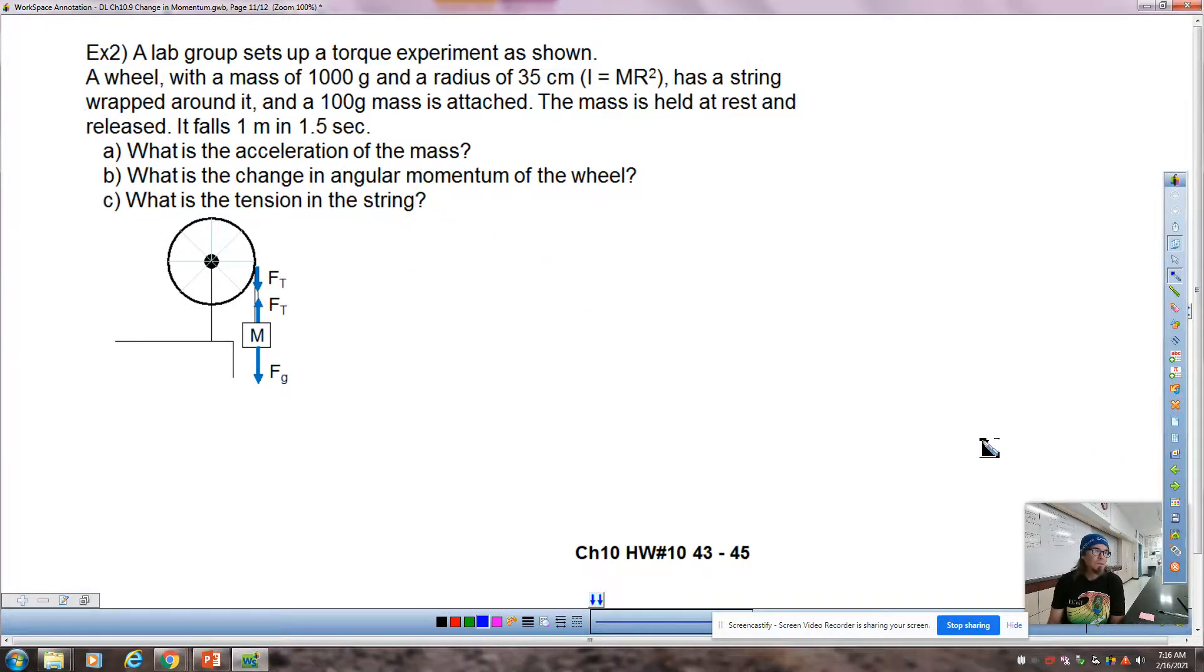Last example. We've been seeing this one here. We have a lab that was similar to this, and I'm not sure if the lab question included the part B with the change in angular momentum. Hopefully it did. But in the end, this obviously is a very common problem, so we should expect this for the chapter test as well. A lab group sets up a net torque experiment as shown. The wheel with a mass of 1,000 grams, radius of 35 centimeters, has a string wrapped around it, 100 gram mass attached. The mass is held at rest and released. It falls one meter in 1.5 seconds. So now we're looking at some motion variable stuff, falls a distance of one meter, and it does this in a time of 1.5 seconds.